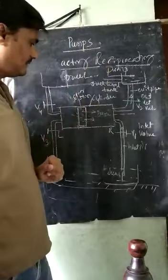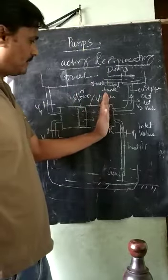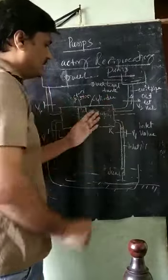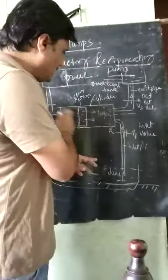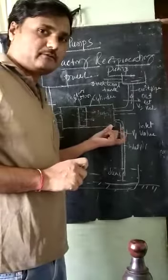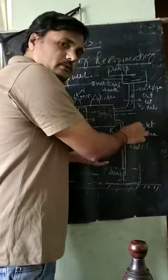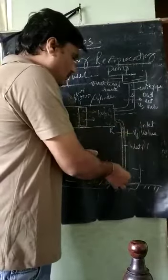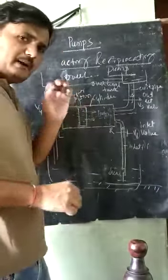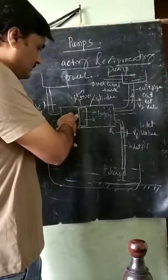When the piston is moving from R to L - for example the piston is here, just see - if it is moving from R to L, a vacuum is created on the R side. So valve P1 will open, and water will start moving inside the cylinder.